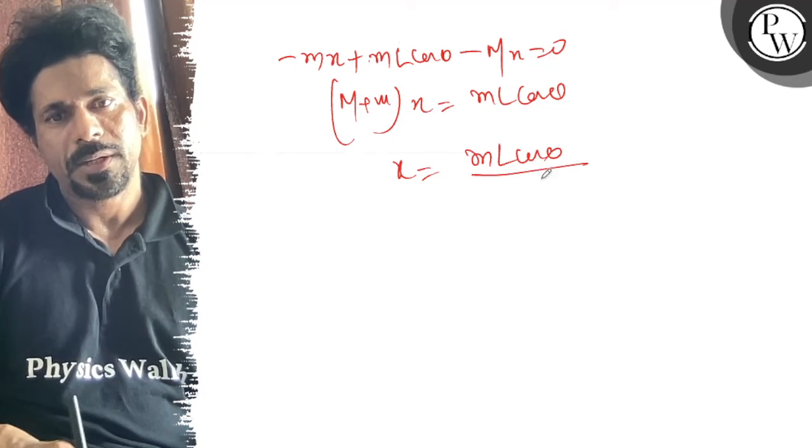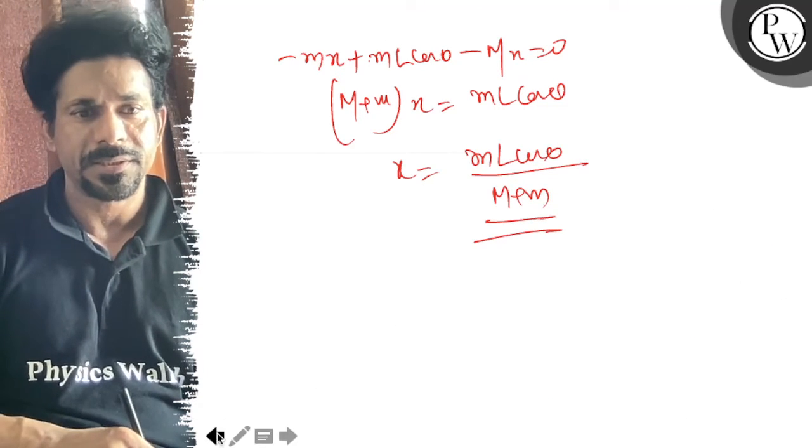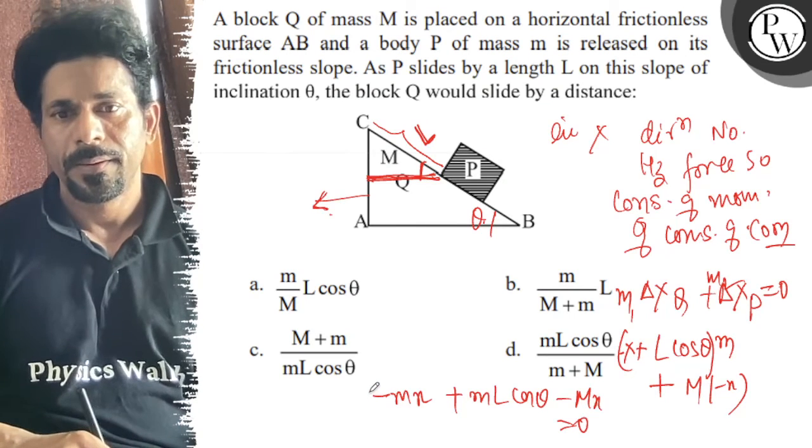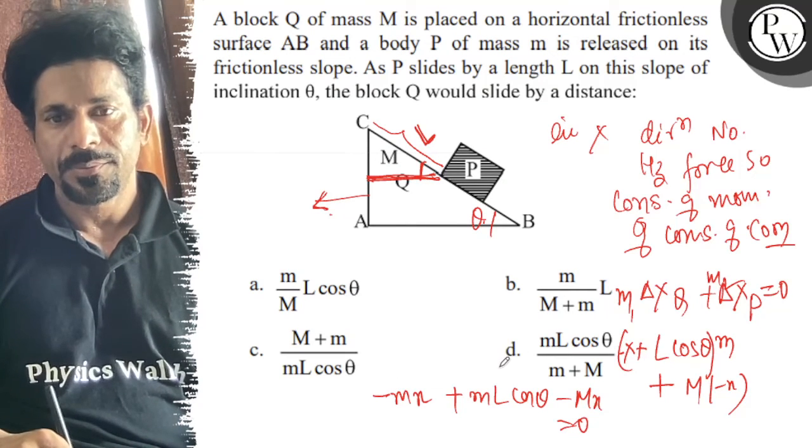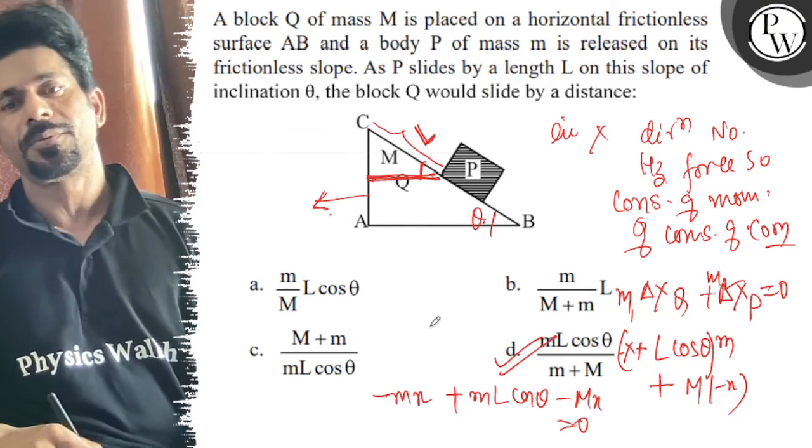That must be the right answer. Let's see the option, so that is mL cos theta upon M plus small m. That D option is correct. All the best.